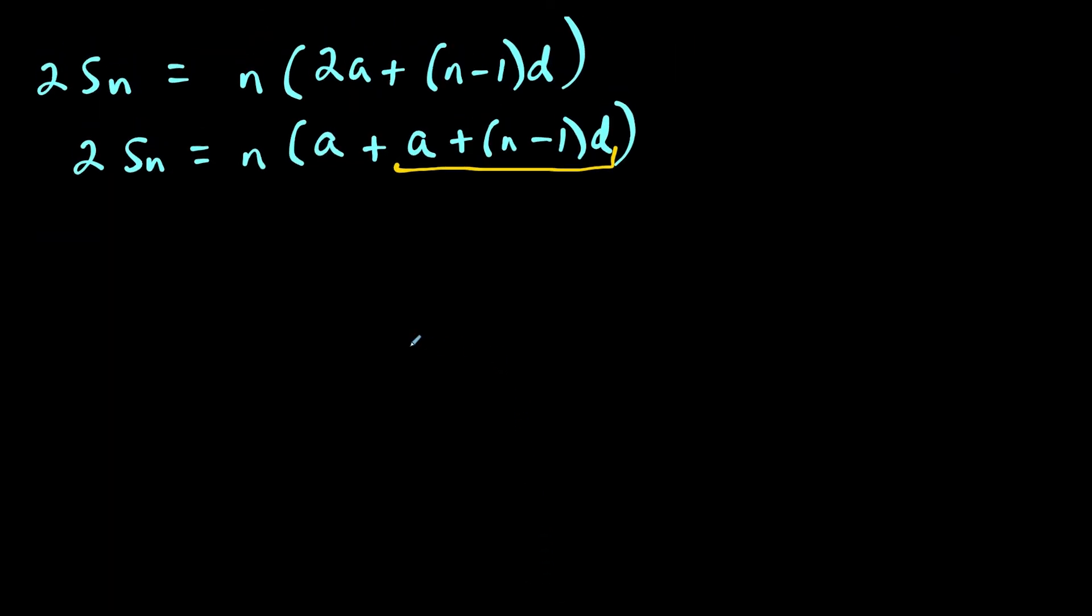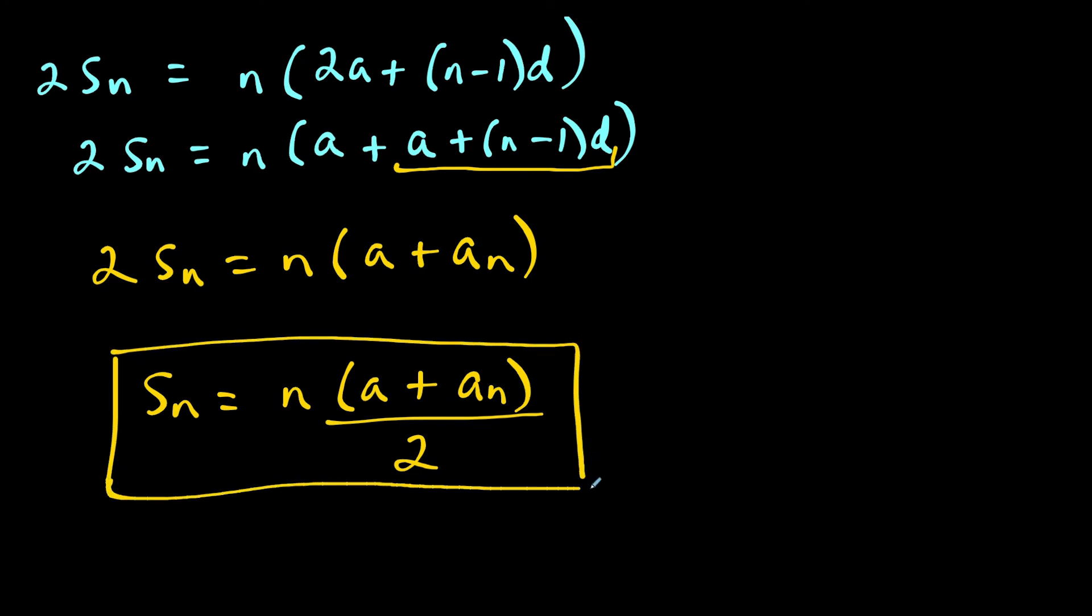What we could say here is that 2 times s sub n equals n times a plus, and this piece that we underlined was a sub n. Now all we have to do is solve for s sub n. So we could divide both sides by 2. So this is going to work out to n times a plus a sub n, all divided by 2. Now in the formula, we just had this piece divided by 2. So it doesn't matter, I could put the fraction over all of this or just this term here. But this is the formula for the nth partial sum of an arithmetic sequence.